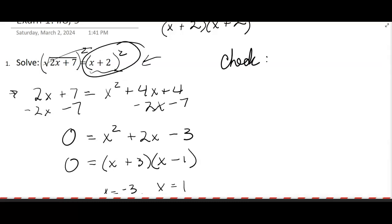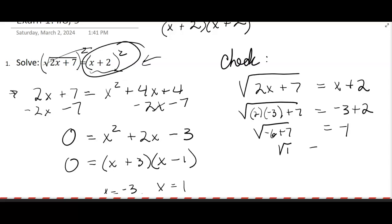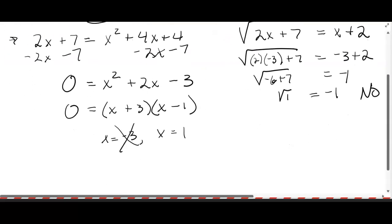And see if negative 3 works. So here's 2x plus 7 equals x plus 2. Let's put in negative 3 and see if it works. 2 times negative 3 plus 7, does that equal negative 3 plus 2? Probably not because I'm going to get a negative 1 over here, and here I'm going to get negative 6 plus 7, which is the square root of 1, which is 1 not negative 1. So no, negative 3 didn't work, so we can't include that in our answer.